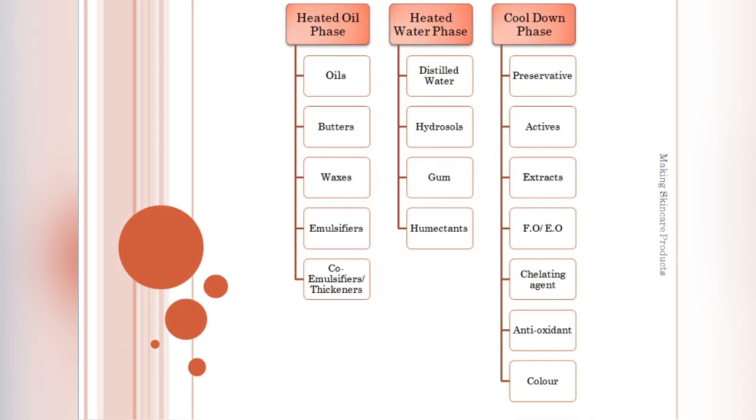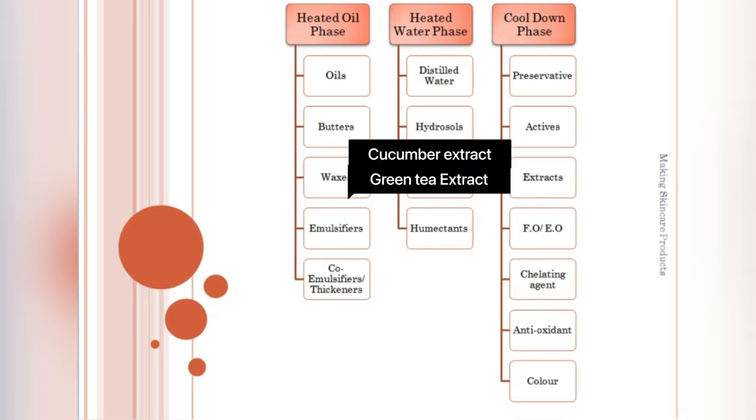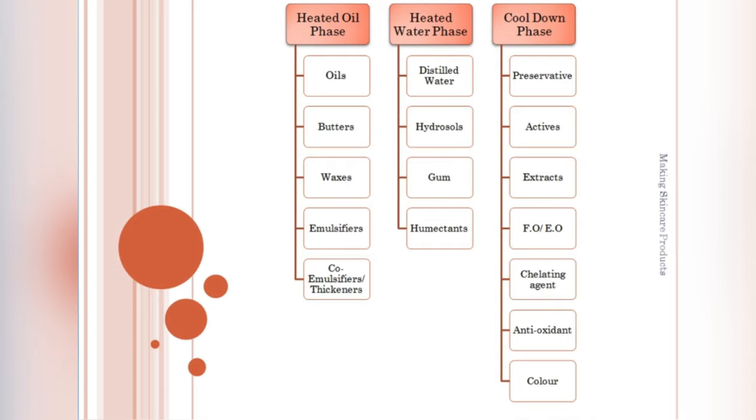In the cool down phase, preservative chosen is Euxyl K712 which is a natural and effective preservative at pH 5.5. For the actives I have taken green tea extract and cucumber extract which are soothing, and fragrance oil floral potpourri which has a beautiful floral scent. For the chelating agent, sodium gluconate which is also natural, and for the antioxidant I have taken vitamin E tocopherol.